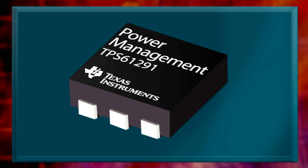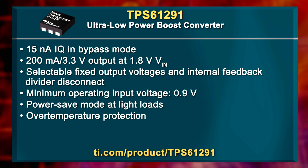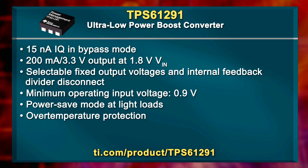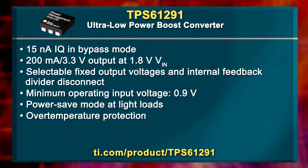Applications for home security and automation, remote control metering for gas and water, as well as many others, will get a boost out of TI's TPS61291. It's an ultra low power boost converter with typically 15nA of quiescent current and bypass mode. The TPS61291 will extend the operating life of 3V primary cell and dual alkaline powered devices.